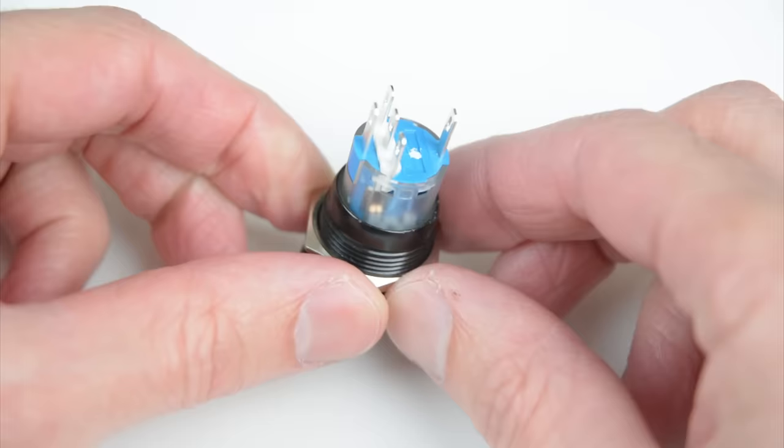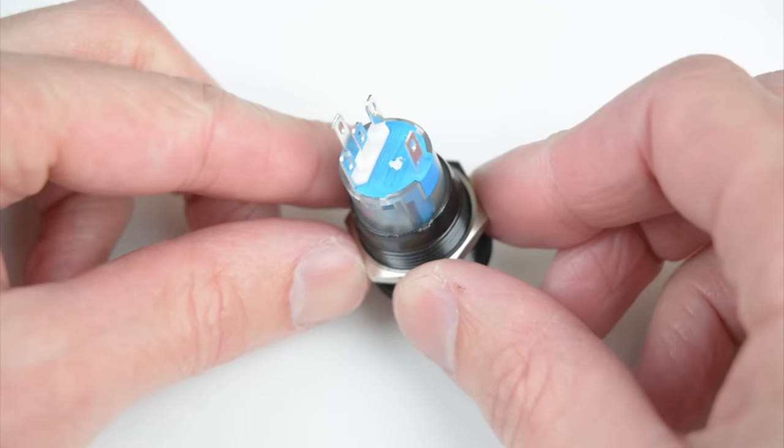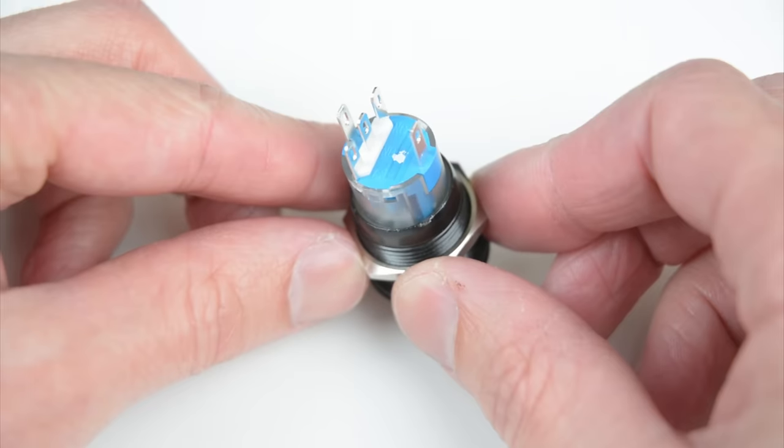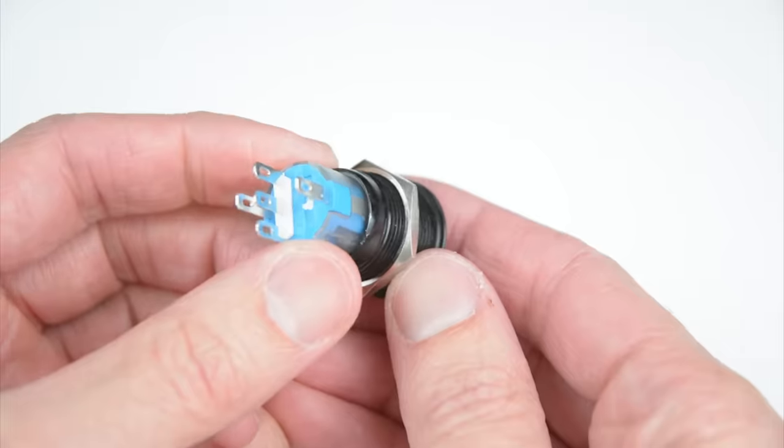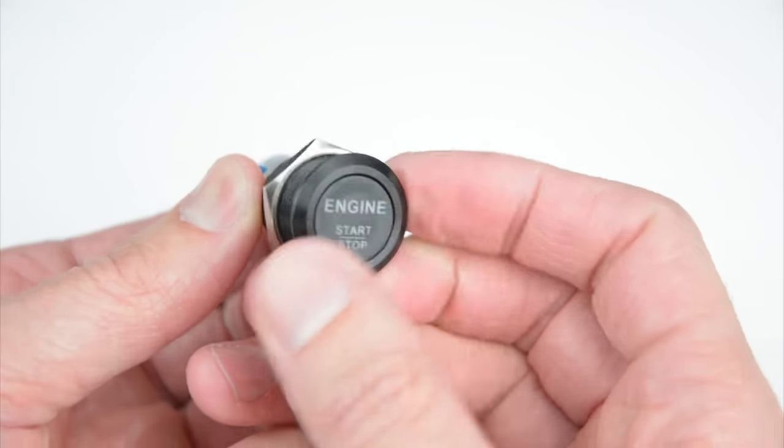Either side are the LED positive and negative terminals, and in the middle we have the normally closed, normally open, and common terminals. We will connect the wires to the common and to the normally open terminals so the switch is only active when pushed.